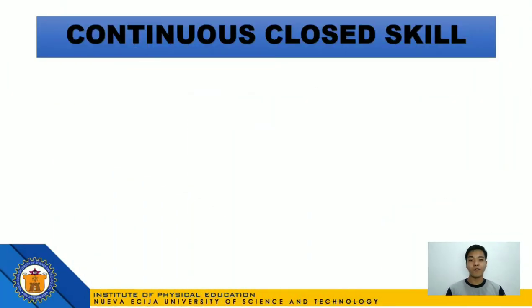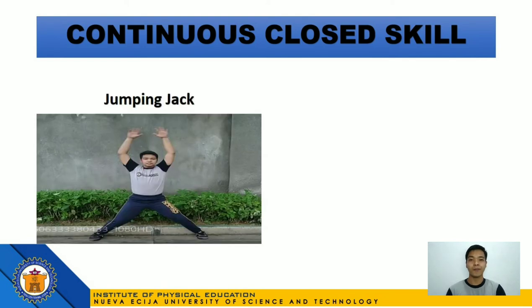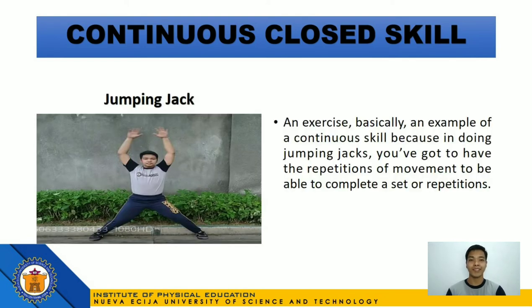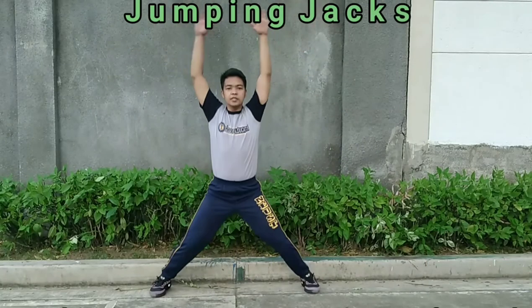Now let's have an example of a continuous closed skill, which is jumping jacks. Jumping jacks is an exercise and an example of a continuous skill because in doing jumping jacks, you've got to have repetitions of movements to complete a set. It became a continuous closed skill because all you have to do is execute the skill without any factors to impede your execution, and you have control of everything.